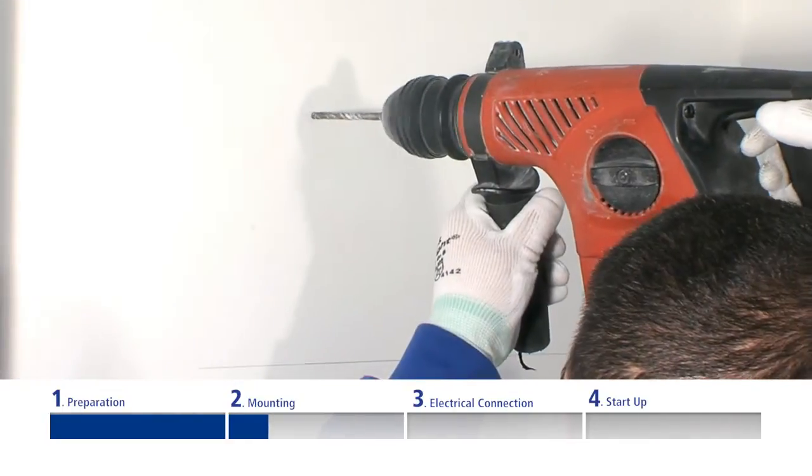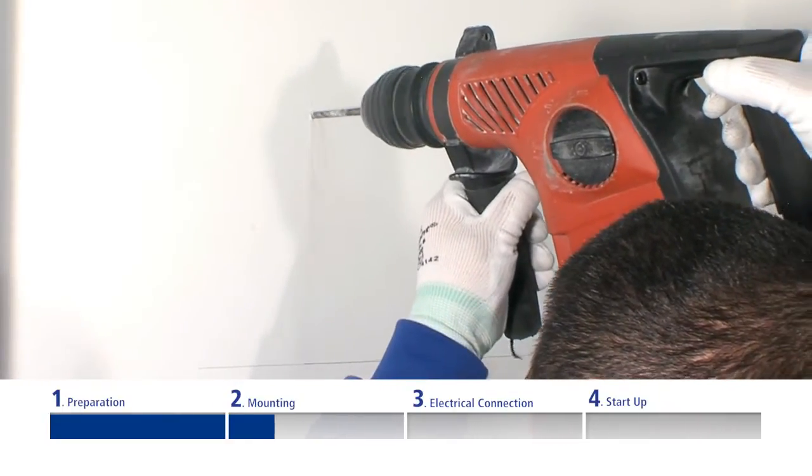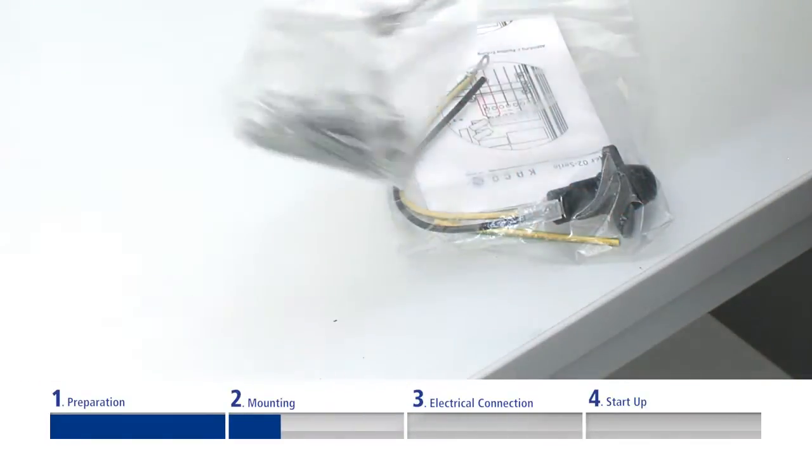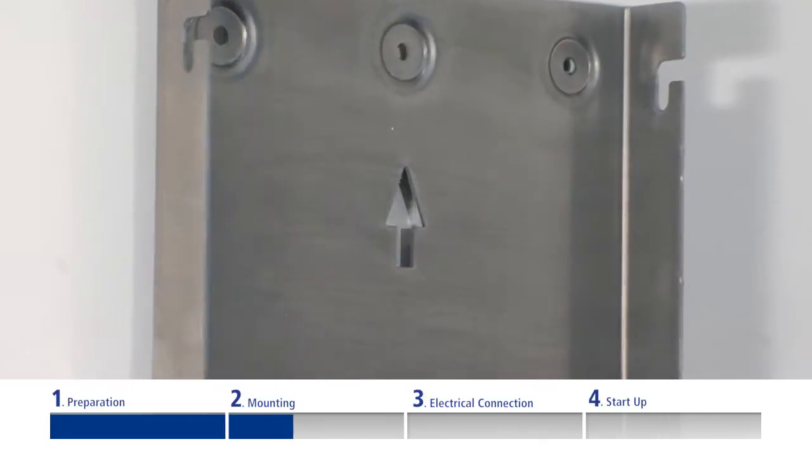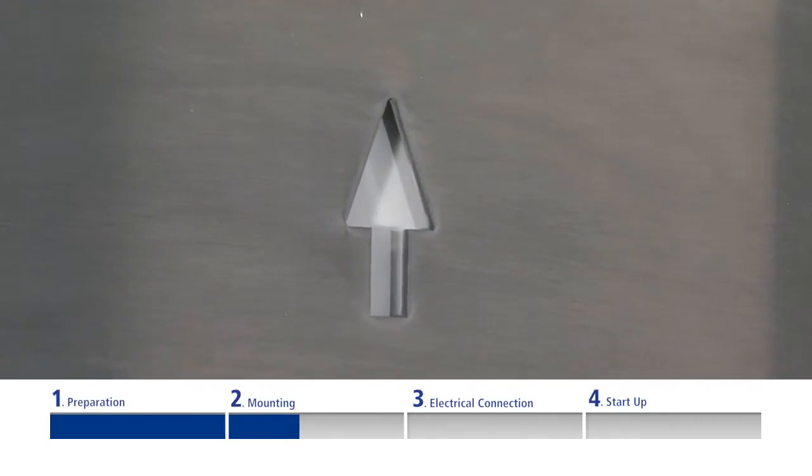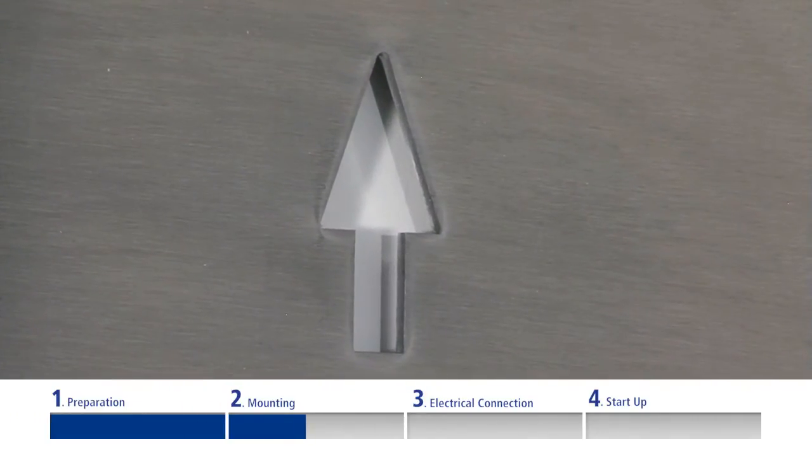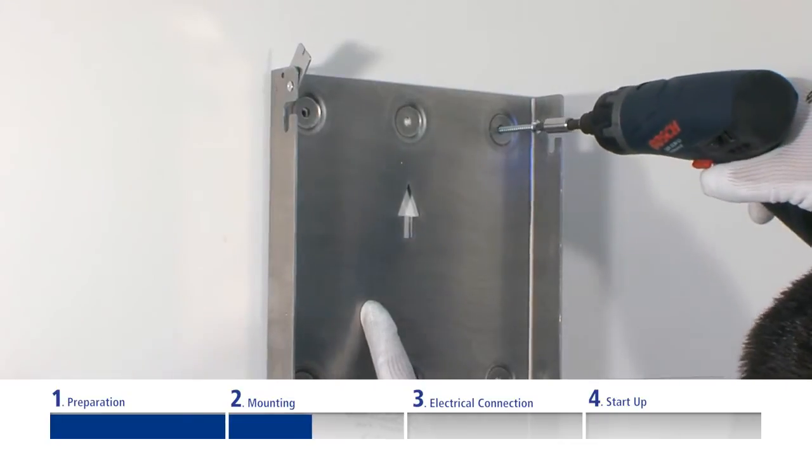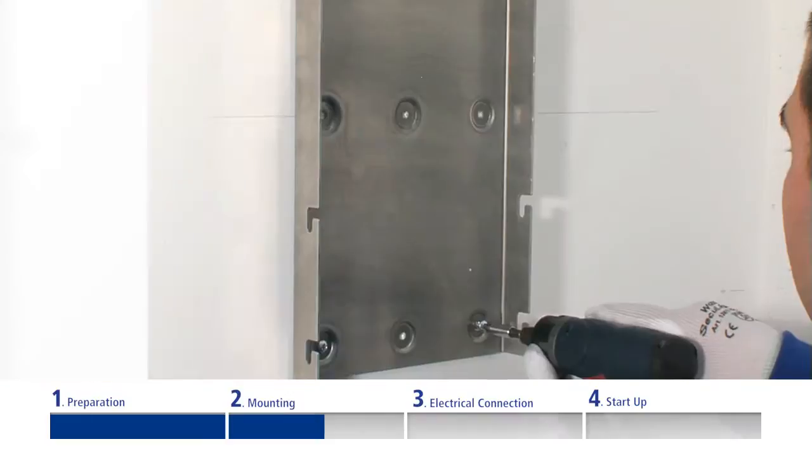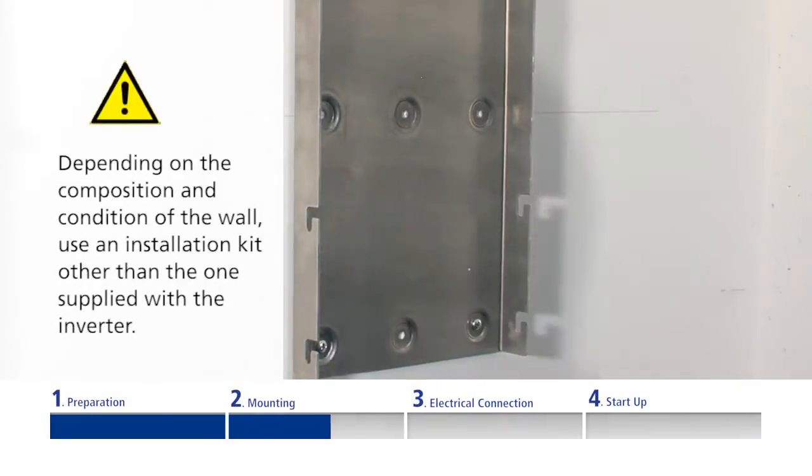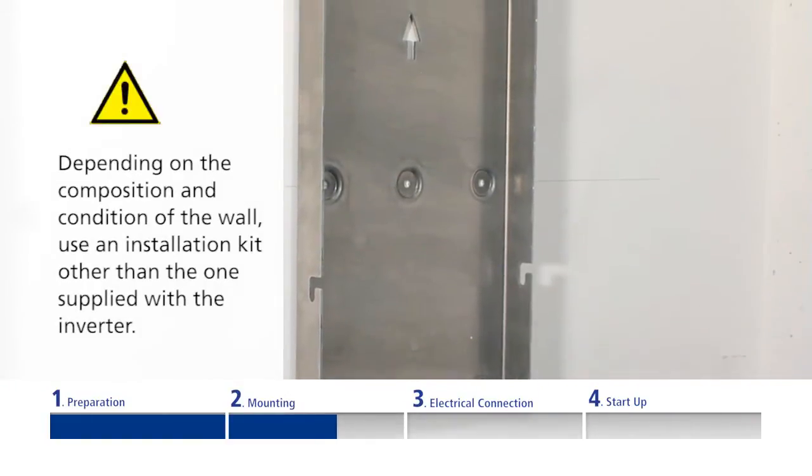Drill the holes and place the fixings into the holes. Secure the wall bracket so that the cut-out arrow in the mounting plate is pointing upwards. Secure the wall bracket using the four accompanying 70mm screws. If necessary, depending on the composition and condition of the wall, use a different installation kit.